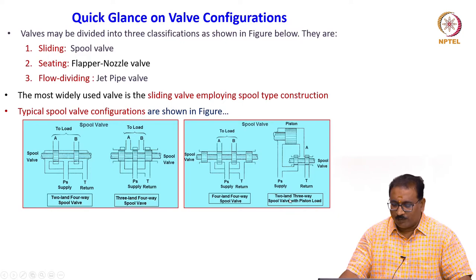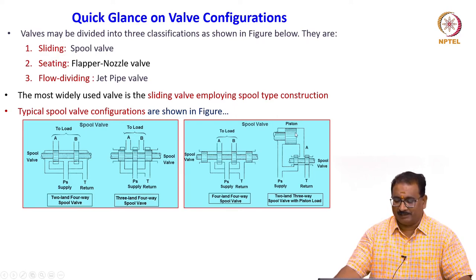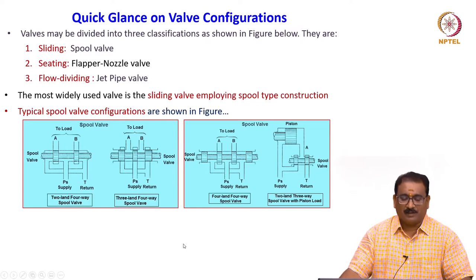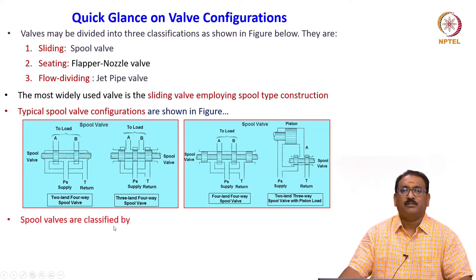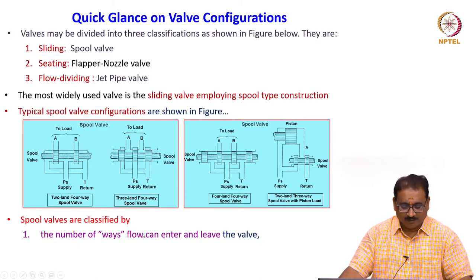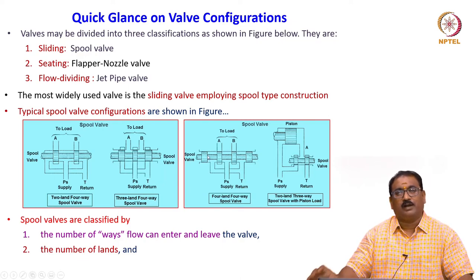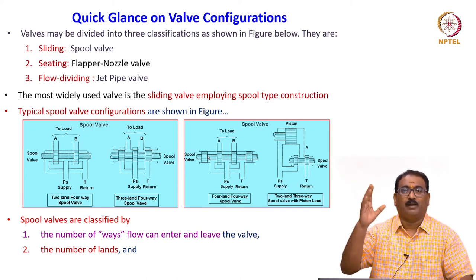A three-way spool valve with a piston load has unequal areas. All valves require the supply port (P line), a return line (tank port T), and at least one line to the load — one port for a single-acting cylinder, two ports for a double-acting cylinder. A three-way valve requires a bias pressure acting on one side of the unequal-area piston for directional reversal. Usually the head area is twice the rod area. A four-way valve has two lines to the load — ports A and B — and spool lines can range from one to six.